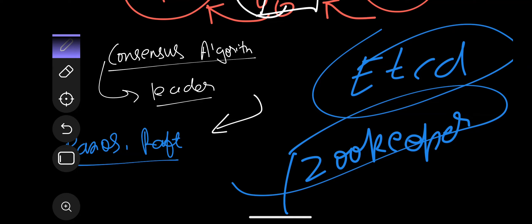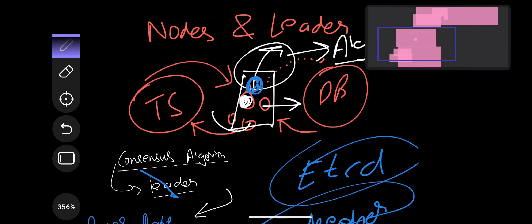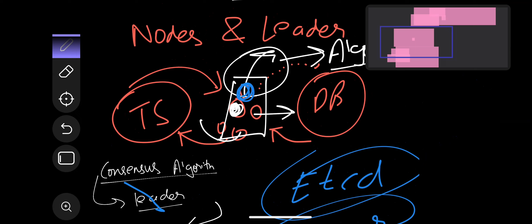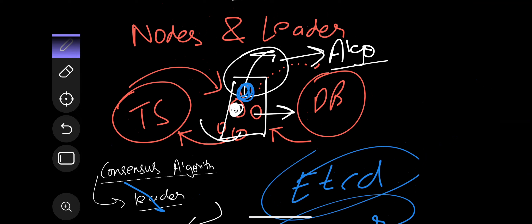This is the whole concept of leader election — why it is important and how it works. You can study further on the web about why leader election is actually used in distributed systems and how the backend algorithms work. For the sake of system design and distributed systems understanding, this is enough. Thank you and have a nice day.